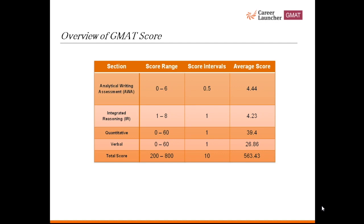Average score in this section is around 26.86. Scores of less than 6 and more than 51 are very rare on both quant and verbal. Total score is scored on a scale of 200 to 800 with intervals of 10.